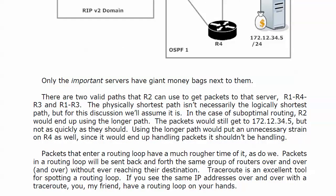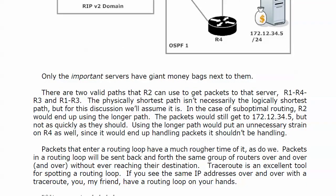Packets that enter a routing loop have a much rougher time of it, as do you and I, the network admins, because packets in a routing loop will be sent back and forth the same group of routers over and over and over without ever reaching their destination. And pings don't really do much for us as far as spotting a routing loop, because they just tell you whether you can get there or you can't. With a ping we usually get either periods, timeouts, or exclamation points.